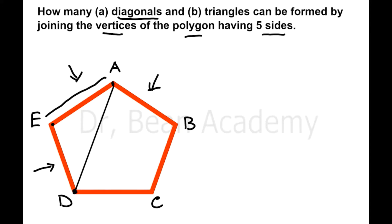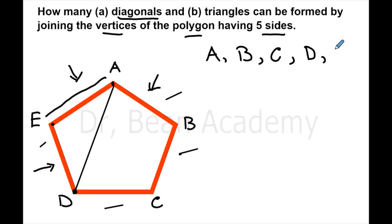Remember, the sides of the polygon are not diagonals — none of them count. The question is how many diagonals we can draw. Think of it like having five choices: A, B, C, D, and E. We want to calculate how many combinations of size two we can make from these choices.